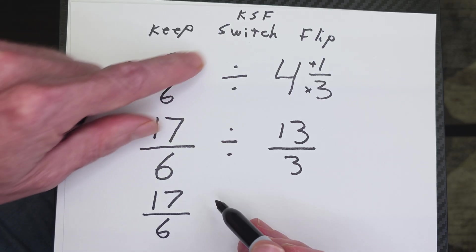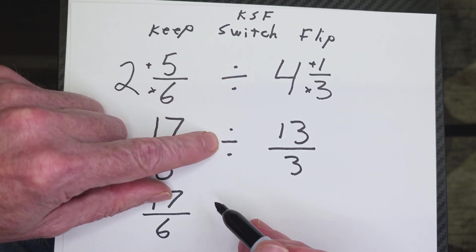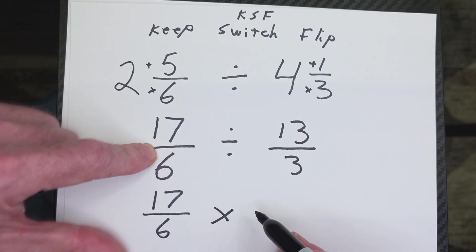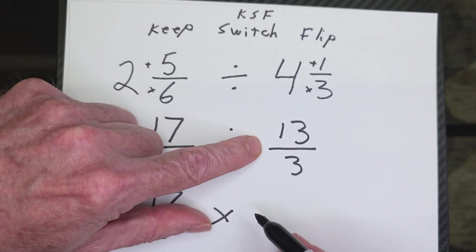All right, now I'm going to switch. I'm going to switch division over to multiplication. All right, and now I'm going to flip. I'm going to flip this number, just turn it right around.